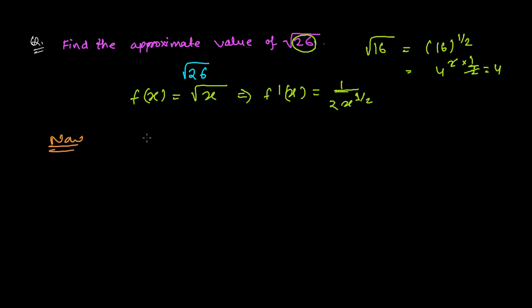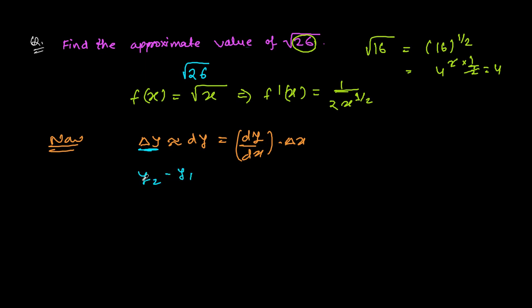After finding the derivative, we write the approximation formula: Δy ≈ dy = (dy/dx)·Δx. Here Δx and dx are the same. In another way, Δy is the difference in y-coordinates, which is y₂ − y₁, i.e., f(x + Δx) − f(x), and this equals f'(x)·Δx.